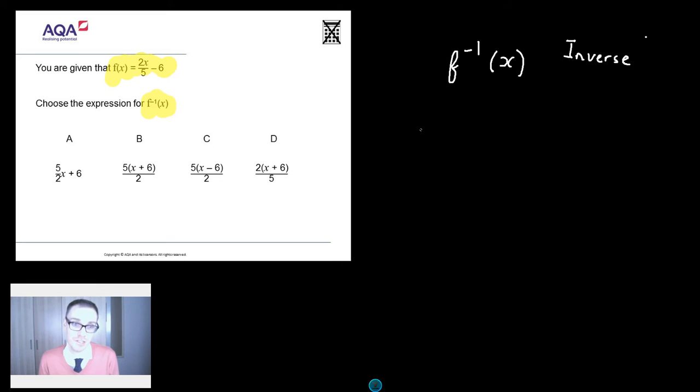Okay so here's how I answer these questions. Firstly I write it out as y equals. So I put y equals 2x over 5 minus 6. And then what I try to do is rearrange this equation. So instead of it being y equals it is x equals.